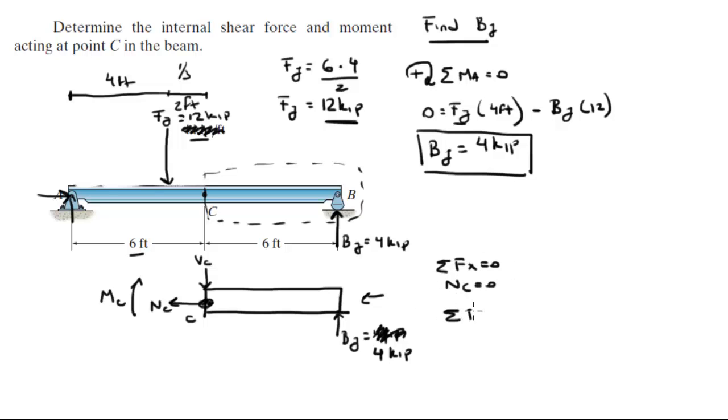We know that the sum of the forces in the Y is equal to 0, so the shear going down plus BY going up is equal to 0. So as you can see, the shear is going to be equal to BY, so the shear is going to be equal to 4 kilopounds.